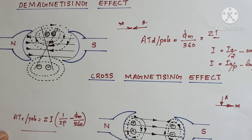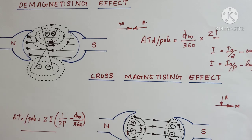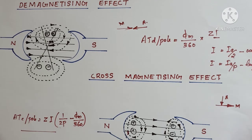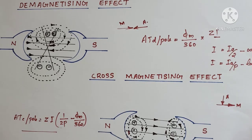We can reduce armature reaction by providing some windings connected in series with the armature windings. These windings are called compensating windings. They are placed along the pole shoe, at the tip of the pole shoe, in series with the armature windings, and they provide the necessary compensation for the armature reaction. In this way we can reduce armature reaction. You can use these equations for calculation purposes. That's all about armature reaction and its effects. Thank you.